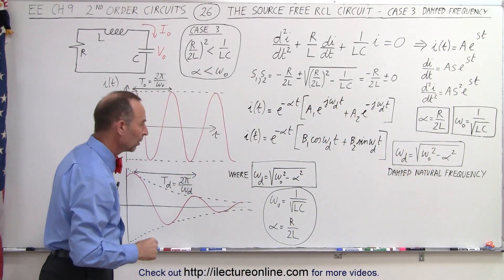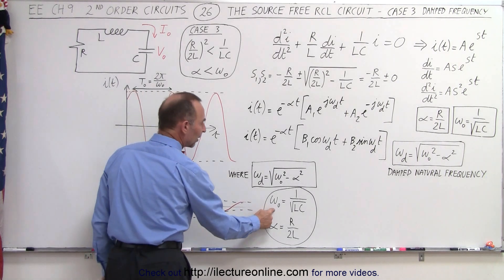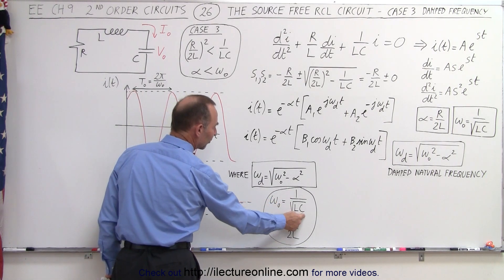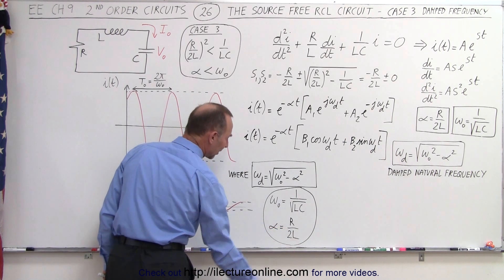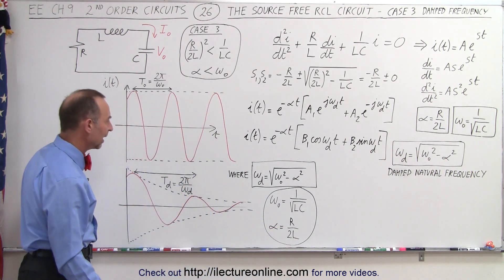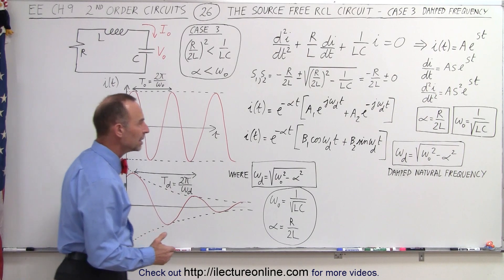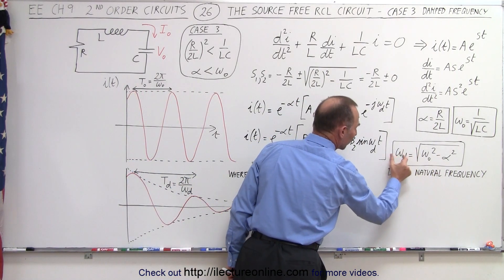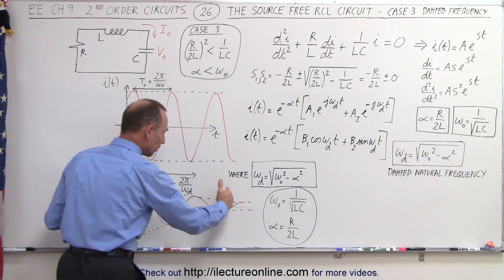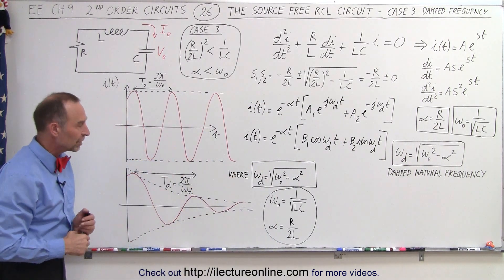Omega sub n is defined as 1 over the square root of LC, and the damping factor is equal to the resistance divided by twice times the inductor. The bigger the damping factor, the smaller omega sub d, and the greater the period of each of the oscillations.